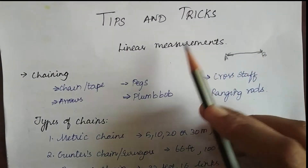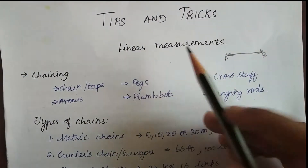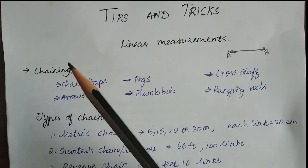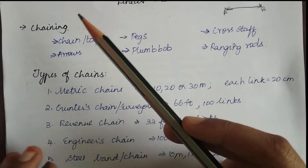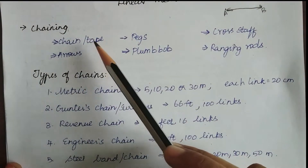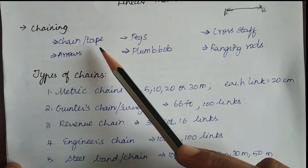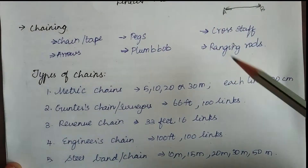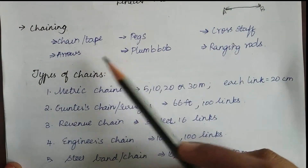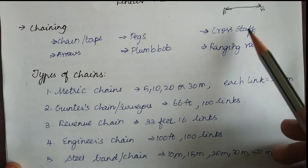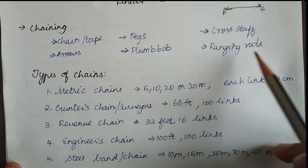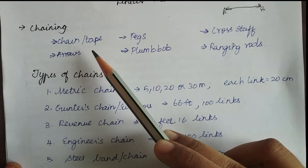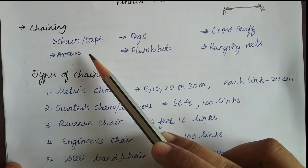One of the traditional ways of finding linear measurements is chaining. In chaining, we use a chain or a tape to measure the distance between two objects. The other instruments used here are pegs, arrows, plumb bobs, cross tabs, and ranging rods. Arrows are metallic steel rods which are used at the end of every chain length.